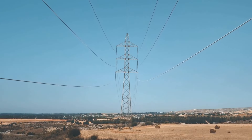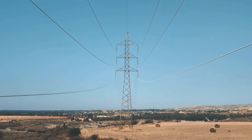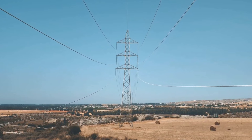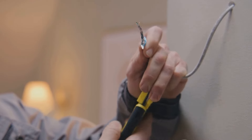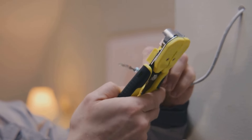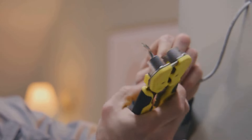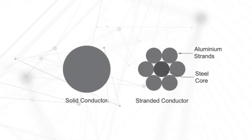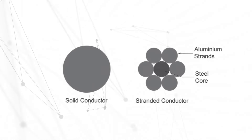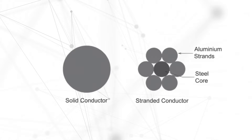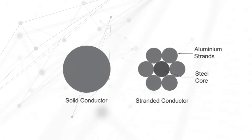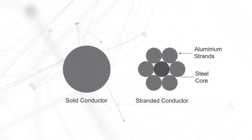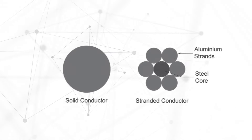Stranded conductors are popular in electrical power systems for transmission and distribution lines. A stranded conductor consists of several thin wires of small cross-sectional area, known as strands. At the center of a stranded conductor, we find a steel conductor which provides high tensile strength. The outer layers are made from aluminum conductors, which provide conductivity.